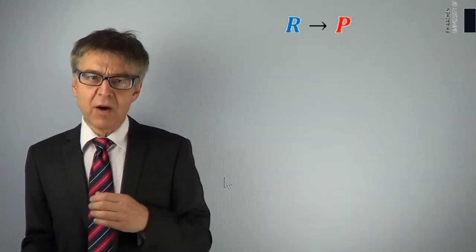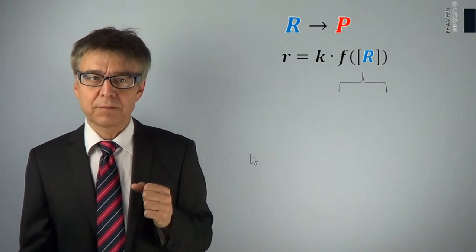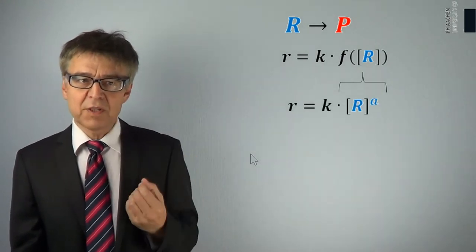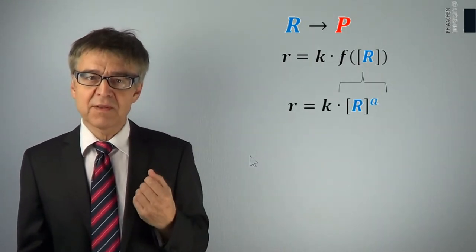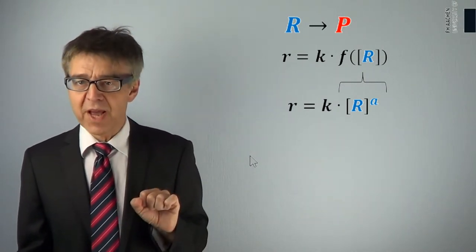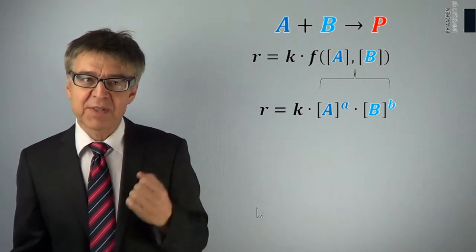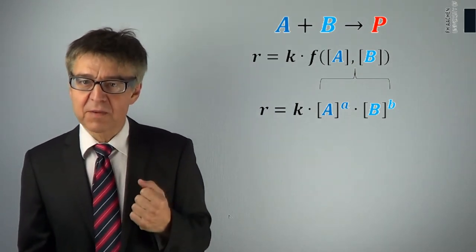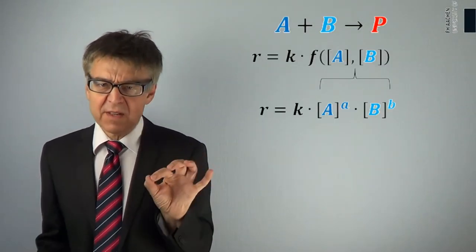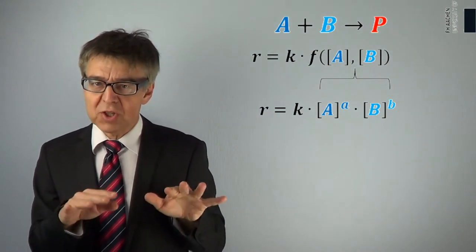The rate law often has the form of a power function. The exponent of the reactant concentration is called the order of the reaction. For reactions with multiple reactants, there may be several orders accordingly. The order indicates how sensitive the reaction rate responds to a change in concentration.